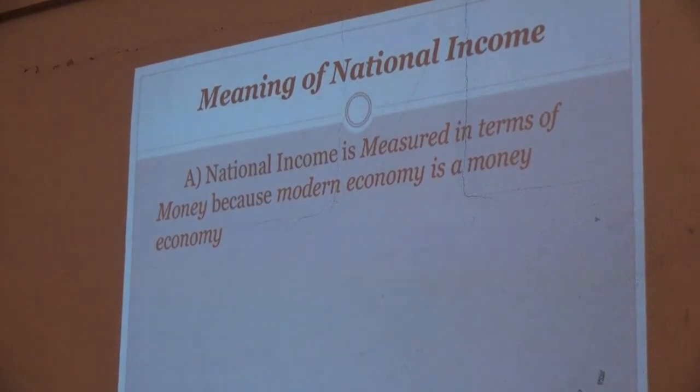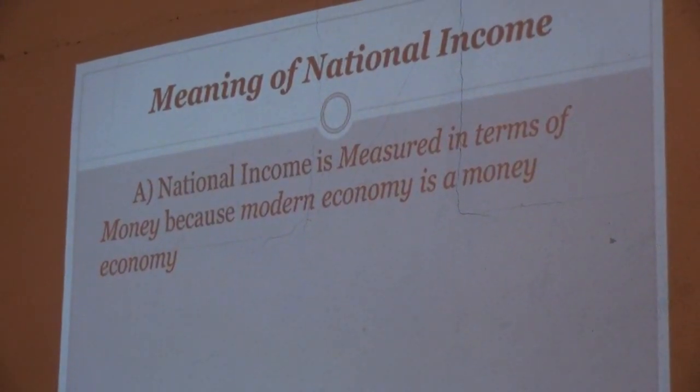First of all, we come to the meaning of national income. In simple language, we measure income in terms of money. Why? Because income cannot be measured in terms of goods and services. We cannot record how many mobiles, benches, or other items have been produced individually. That is why we take the aggregate monetary value of those commodities. The modern economy is a money economy, and that is why national income is measured in terms of money.